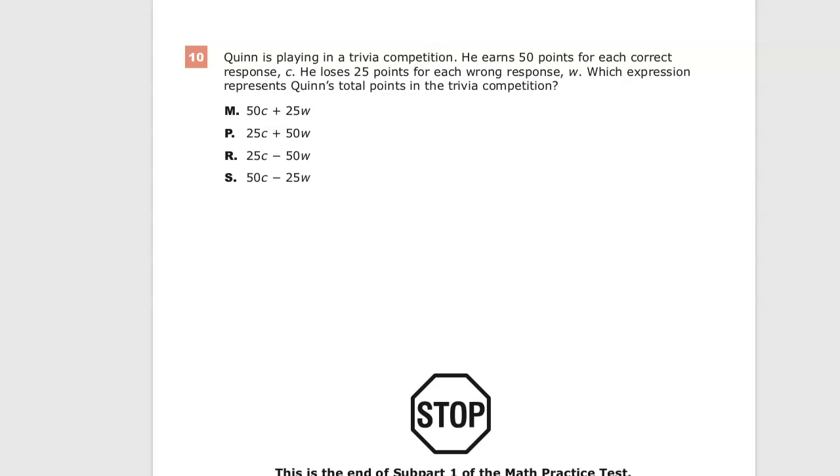Quinn is playing in a trivia competition. He earns 50 points for each correct response, and he loses 25 points for each wrong response. Which expression represents Quinn's total points in the trivia competition?